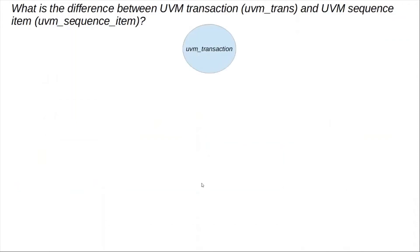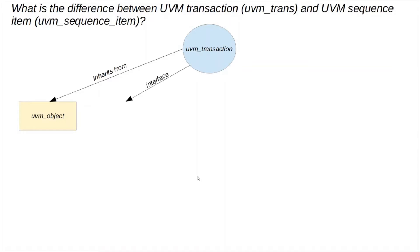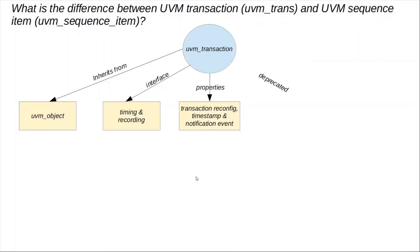So what exactly is a UVM transaction? A UVM transaction is something that is derived from or extends from a UVM object. On top of the UVM object class, it adds a few interfaces which include the timing and recording interfaces, and additional properties are added which include transaction reconfiguration, transaction ID, timestamp, notification events, etc. This is sort of like something from an old-school methodology and it has since been deprecated. Going forward in UVM, we do not extend from a UVM transaction class anymore.